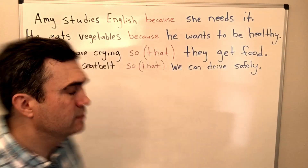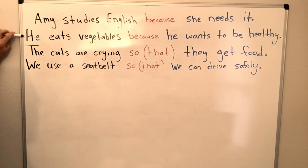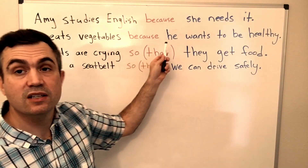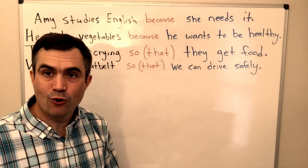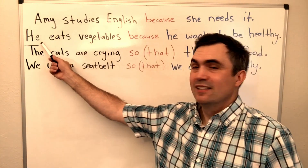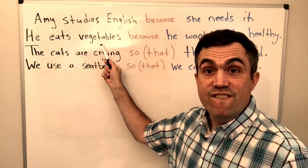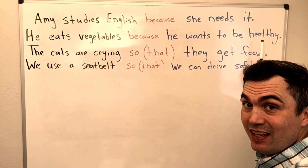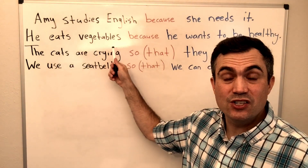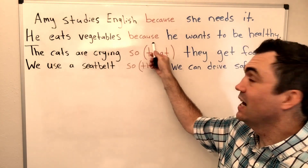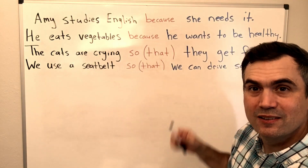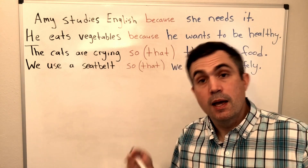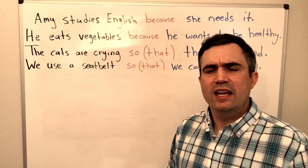Let's look at another example: 'He eats vegetables because he wants to be healthy.' Here's the main clause — 'he eats vegetables' — and then the adverbial clause: 'because he wants to be healthy.' Again, 'because' tells us why. It's an adverbial clause of reason.